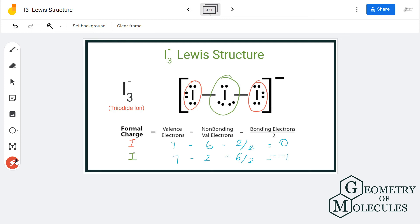The iodine atoms on the outside have seven valence electrons, of which six are non-bonding and two are bonding, giving a formal charge of zero. But the central iodine atom has seven valence electrons, two non-bonding pairs, and six bonding electrons, which means it has a charge of minus one.